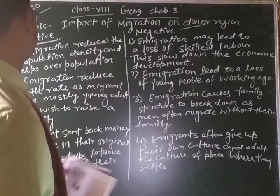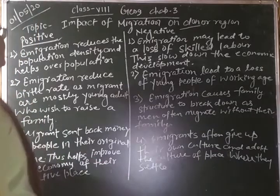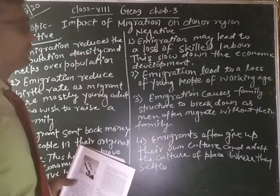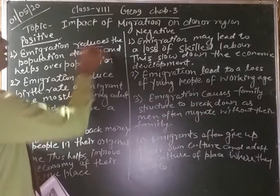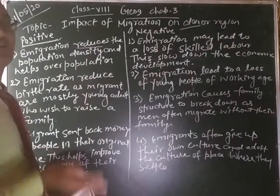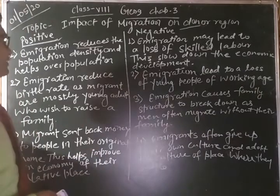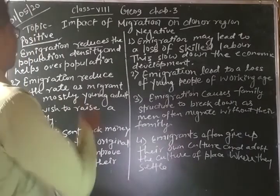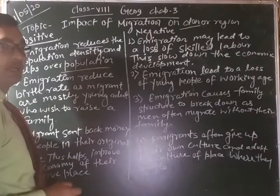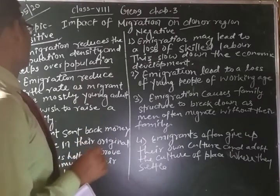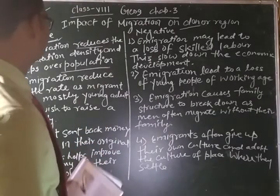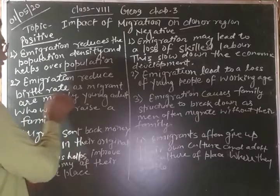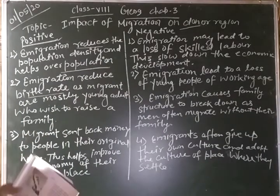There are both positive and negative impacts. Let's see the positive impacts first. Immigration reduces the population density — people who go to other countries or states reduce the population density of the donor region and help overcome overpopulation.